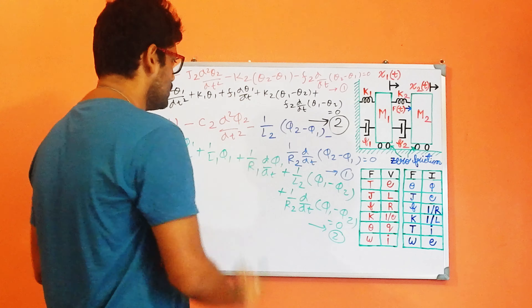For example, torque maps to current. At the place of moment of inertia, I used the capacitor C, giving d²/dT² of θ as φ. K2 maps to 1/L factor, and at the place of θ2 and θ1, I used φ2 minus φ1. For the last part, F2 maps to 1/R, so I used 1/R2 · d/dT of (φ2 minus φ1), equal to 0. I followed the same procedure for equation 2 as well.